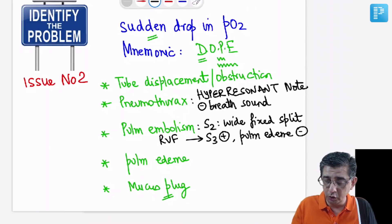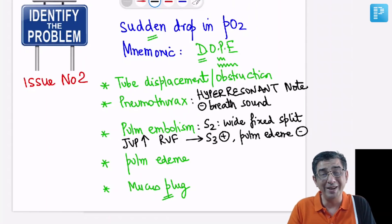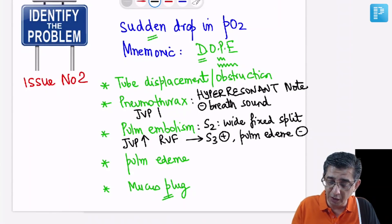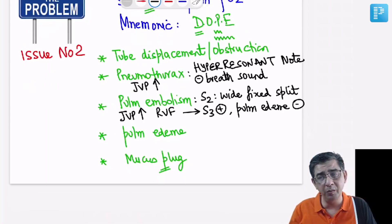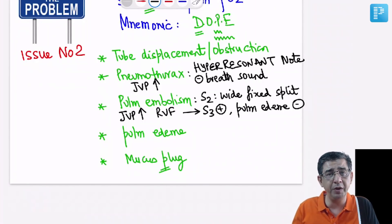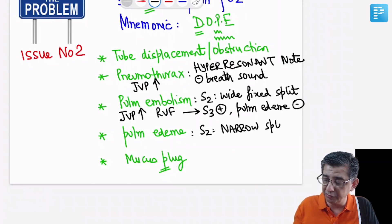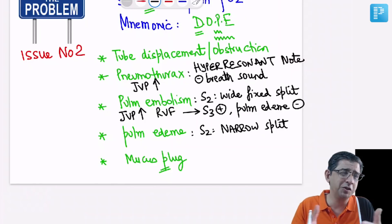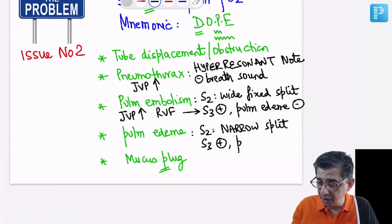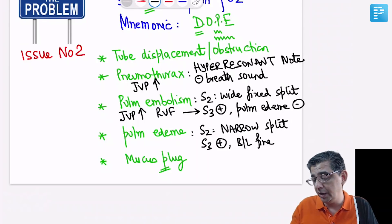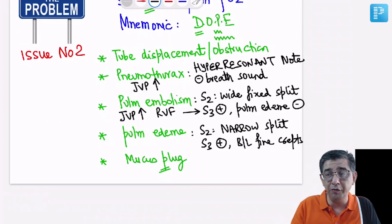If a patient on the ventilator has a sudden decrease in PO2 and the neck veins are extremely congested, you could be dealing with pneumothorax or pulmonary embolism. Differentiate using breath sounds for pneumothorax, and second and third heart sound abnormalities for pulmonary embolism. For cardiogenic pulmonary edema, the second heart sound will be narrow split — left ventricular failure always gives a narrow split S2 — and there will be bilateral fine crepitations starting in the infra-axillary areas and moving upward.